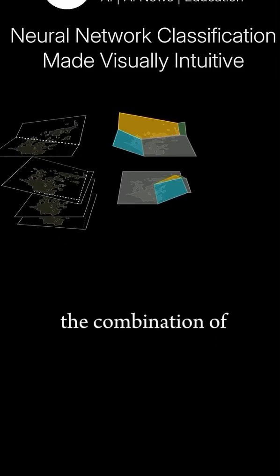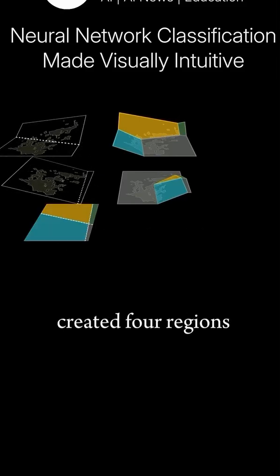After our first layer, the combination of our two ReLU folds created four regions for the next layer of our model to work with. These are easiest to see in a 2D projection like this.